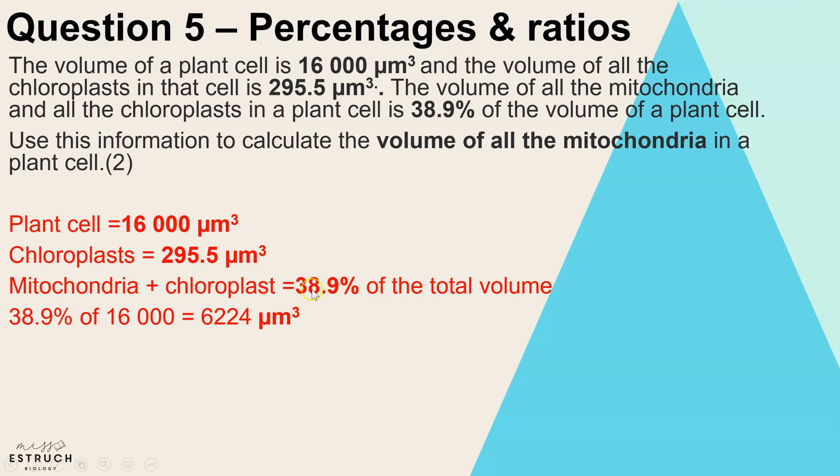My first step is actually working out then what is 38.9 percent of the volume. So 38.9 percent would be 0.389 times 16,000, and that gives us 6,224 micrometers cubed. Now that gives us the volume of the mitochondria and chloroplasts combined. We know that this is the volume of the chloroplasts, so we just need to take that away to get our volume of mitochondria. So it's 5,928.5 micrometers cubed.